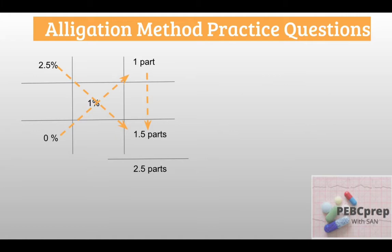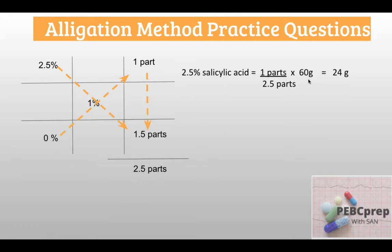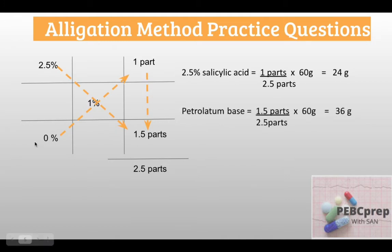Total parts: 1 + 1.5 = 2.5 parts. For the proportion calculation: 2.5% salicylic acid = 1 part out of 2.5 parts multiplied by 60 grams — we get 24 grams. For petrolatum base: 1.5 parts divided by 2.5 parts multiplied by 60 grams — we get 36 grams.